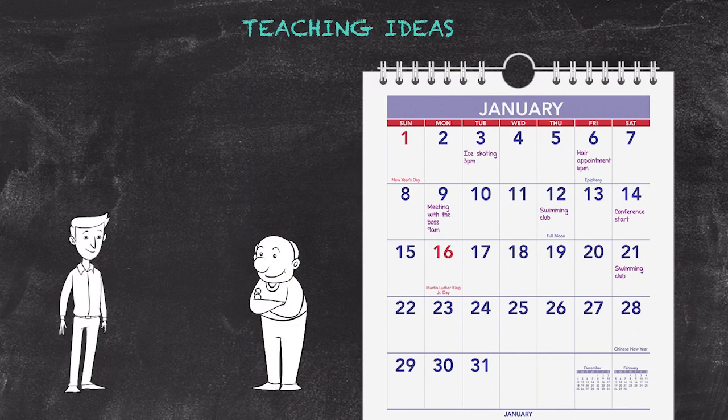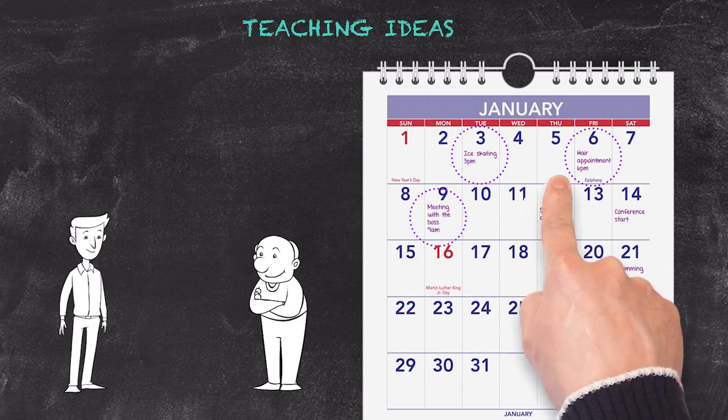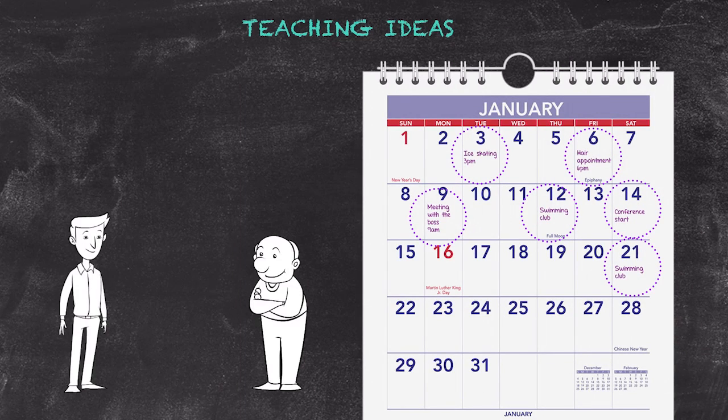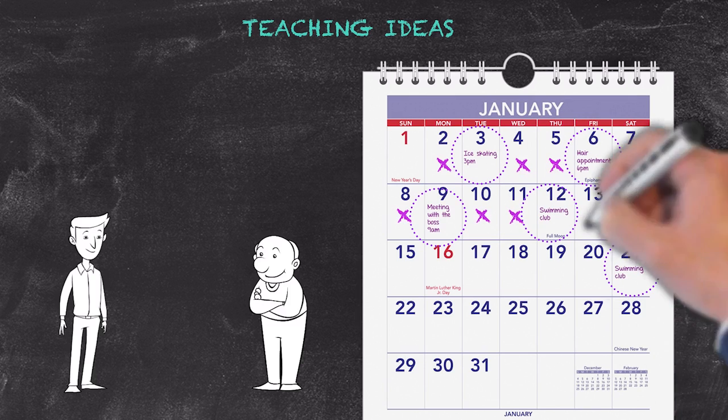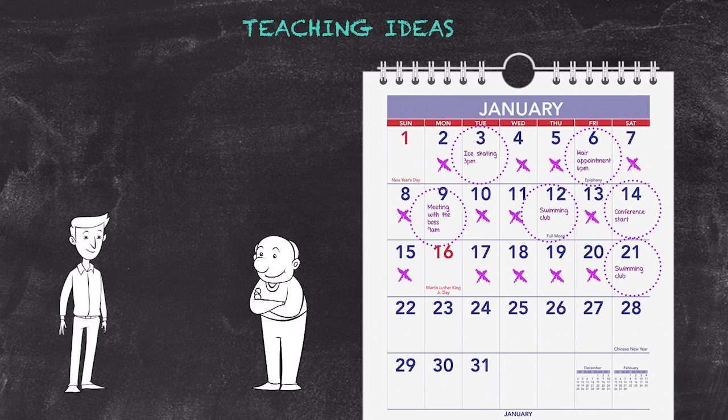One student will have a planner such as this filled in with quite a few activities. Their partner will also have a planner filled in with activities on opposite days. The activity will be rigged so that only one day allows for both of them to meet together.